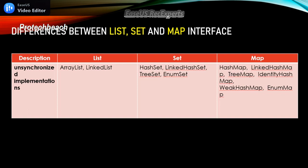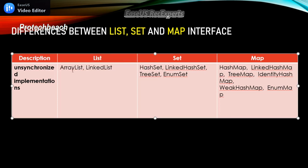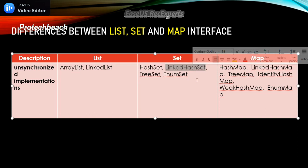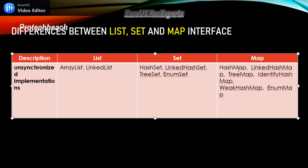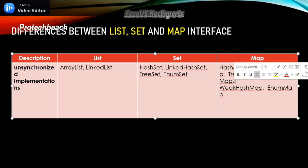Now we'll see the unsynchronized implementations. Unsynchronized implementations under List are ArrayList and LinkedList. HashSet and LinkedHashSet are unsynchronized implementations of Set. For Map, HashMap, LinkedHashMap, and TreeMap are the unsynchronized implementations.